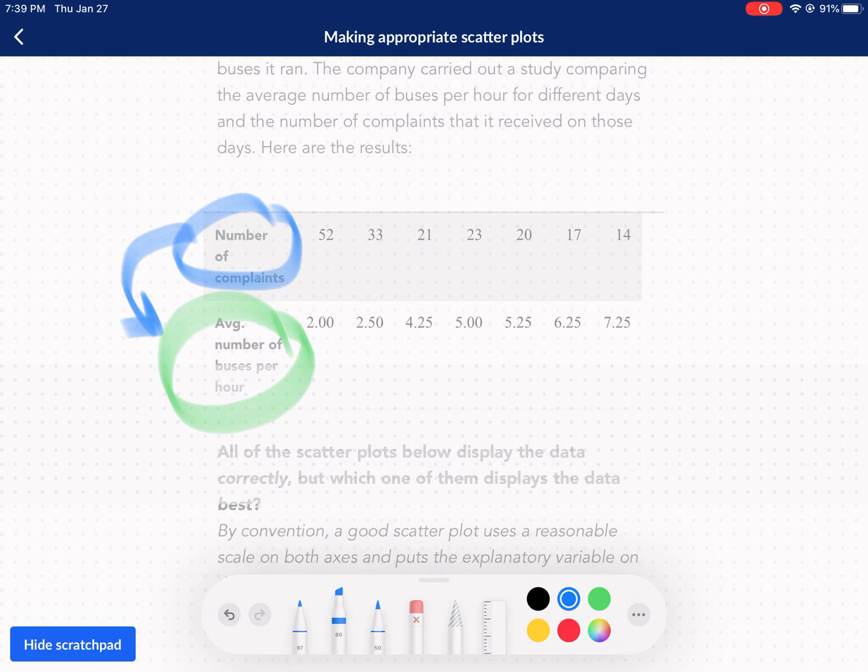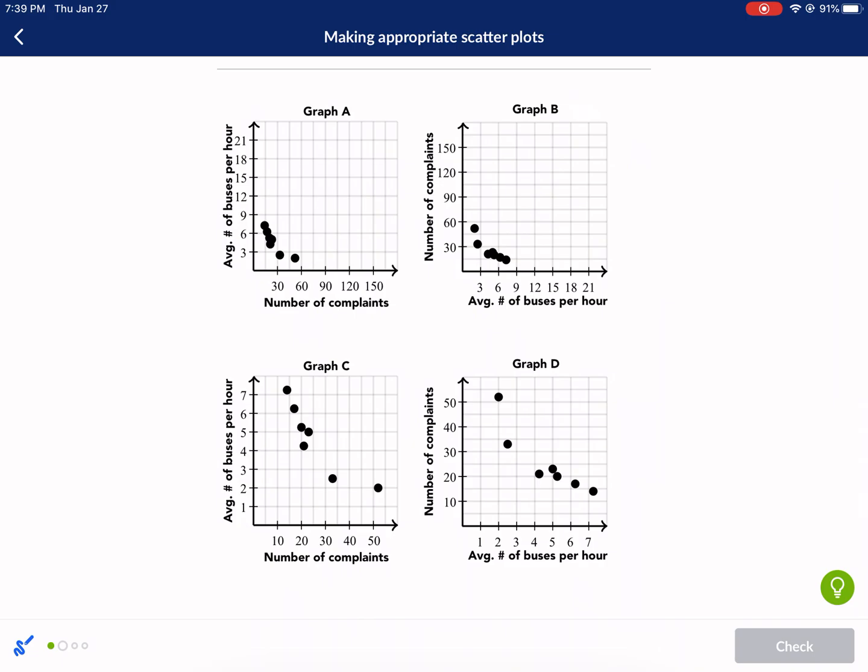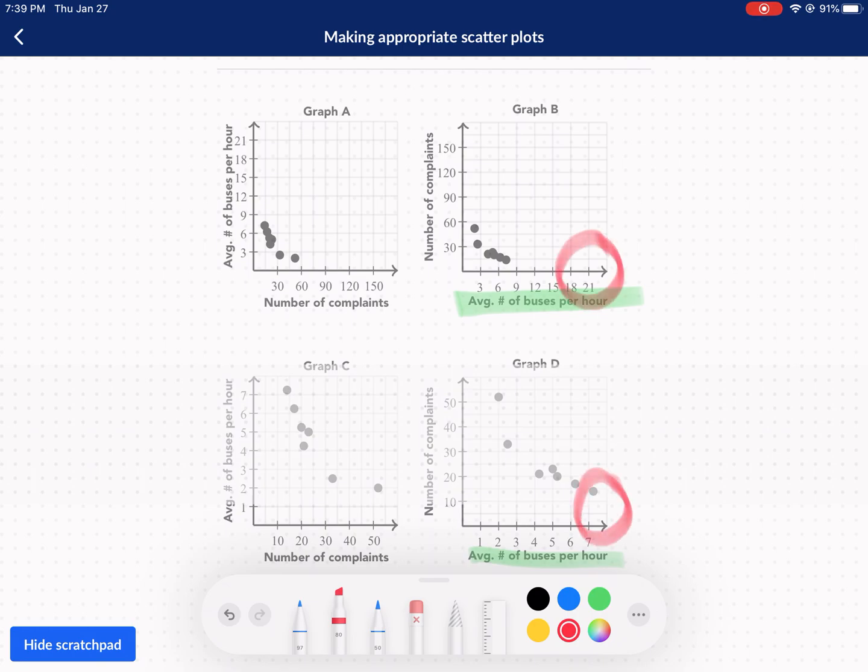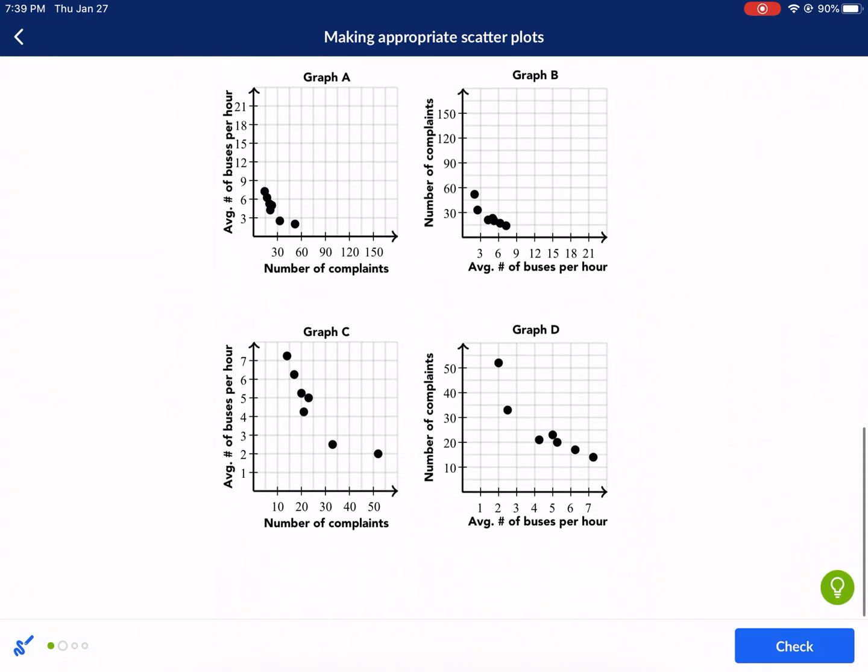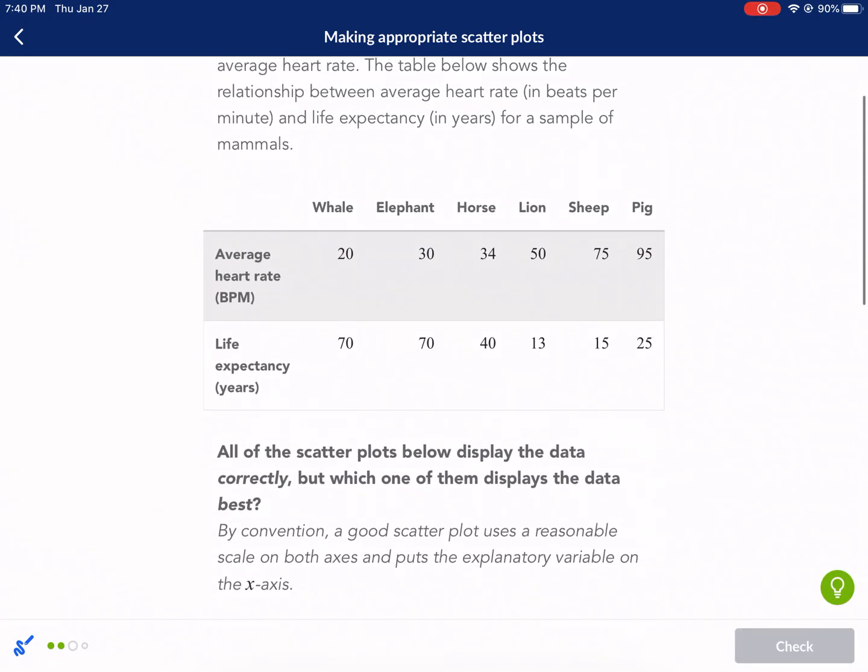The next thing we have to look at before we scroll down is we want to know that buses go from 2 to 7.5 and then 2 to 14 for number of complaints. So we're going to scroll down here and look for that. First off our independent variable is going to be number of buses. Complaints is not going to dictate the number of buses. The complaints are going to be a result of the number of buses. So these are two options here. And then obviously this is more appropriate. We don't need all the way to 21. That's all this empty space. So we're going to go with graph D.